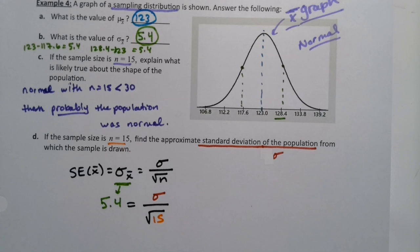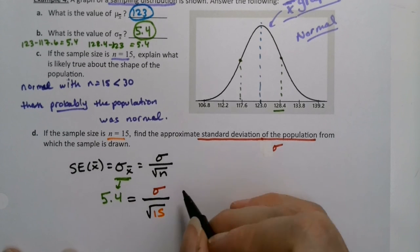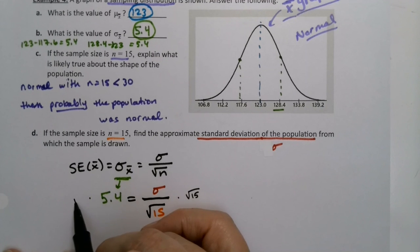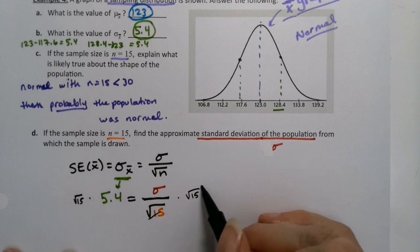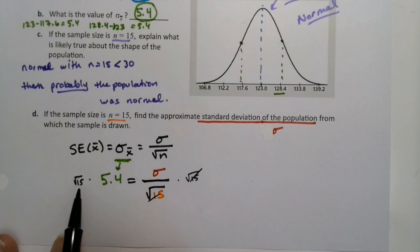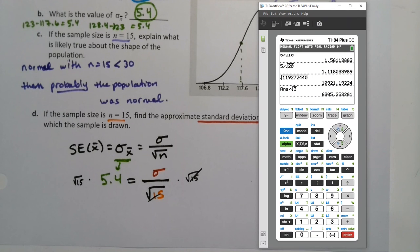And they're asking us to solve that for sigma. What you have to do, algebraically speaking, this is division right here. And the way to undo division is to multiply. So what you do is you multiply both sides by the square root of 15. When you do that over here, they'll cancel. Square root of 15 and square root of 15 will go away. So all I need to do is grab a calculator and take the square root of 15 and multiply it by 5.4.